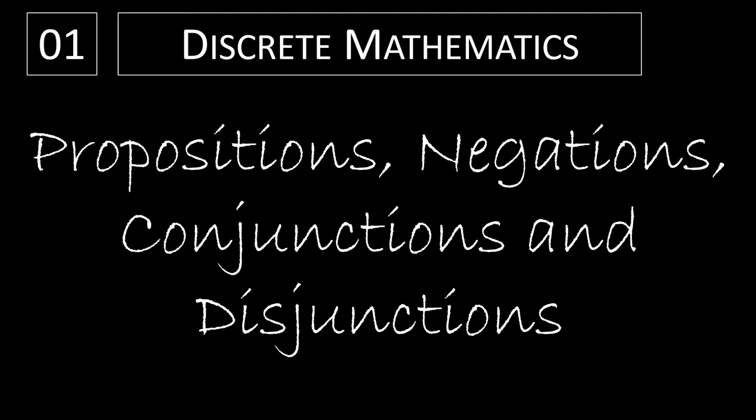In this first video of the discrete mathematics playlist, we are going to look at propositions — what they are — and then look at negations, conjunctions, and disjunctions. We'll also take a look at the truth tables that go along with those connectives. The connectives are the negations, conjunctions, and disjunctions.